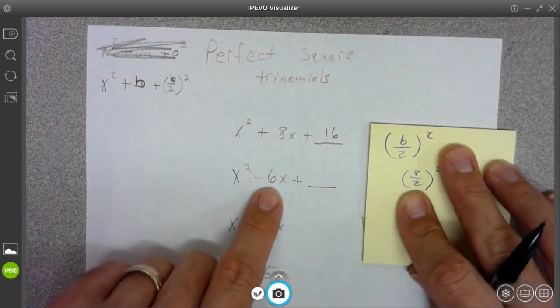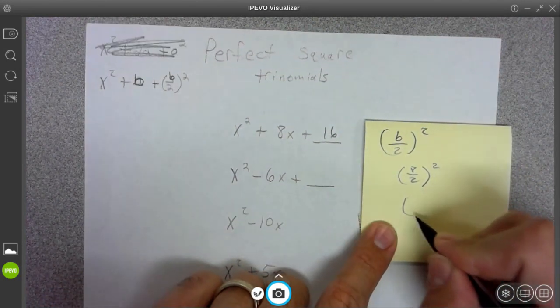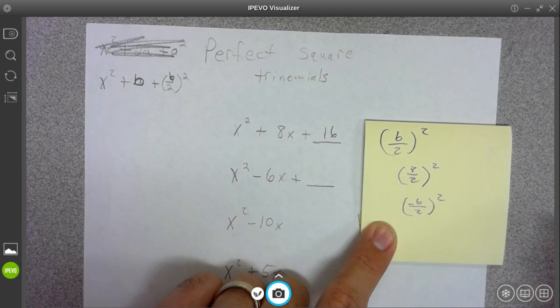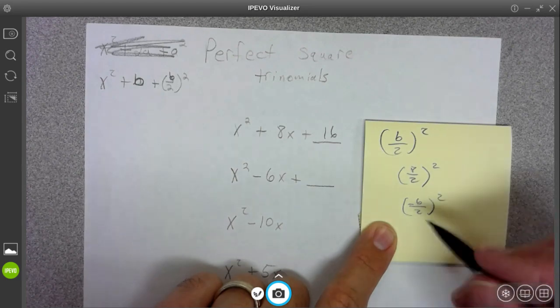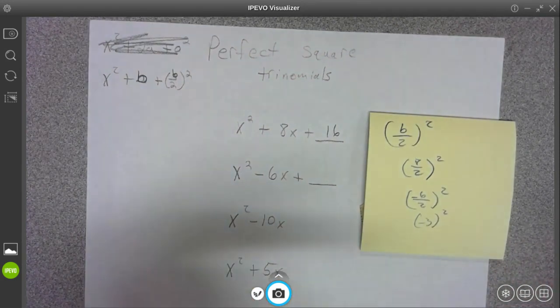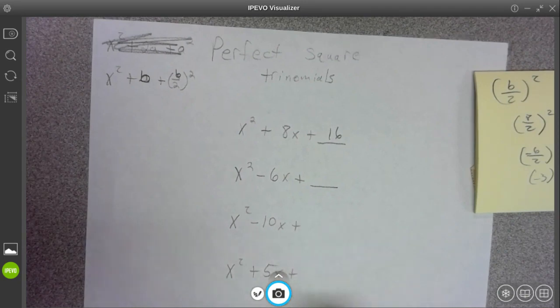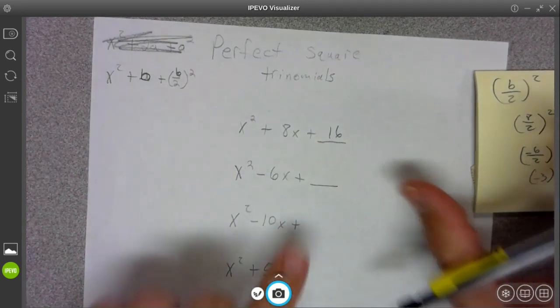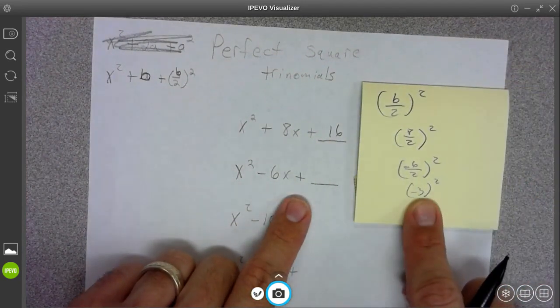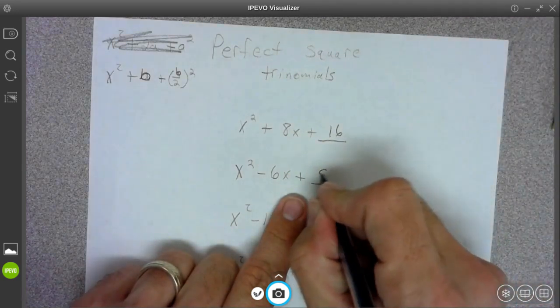Let me do this one here. Half of the negative 6 and then square that. So half of negative 6 is negative 3, but when you square that it's going to be positive. So that's why this number over here is always going to be addition, because when you square it, it makes it positive. This is 9.